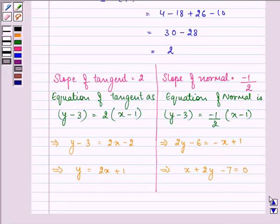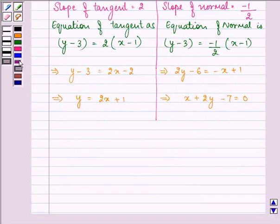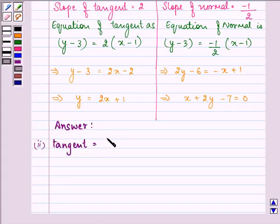Here it will come minus 1 will be minus 7 equal to 0. So the answer for tangent is y is equal to 2x plus 1.